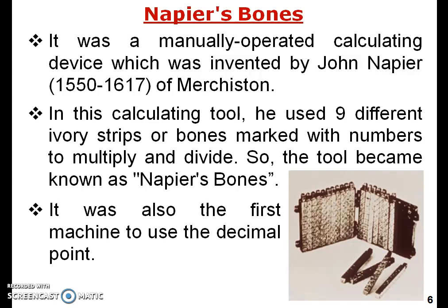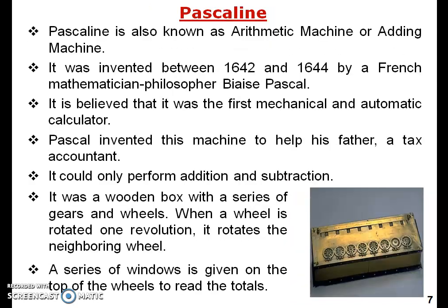The Pascaline was an advancement of the Napier Bones machine. Also known as an arithmetic machine or adding machine, it allowed two numbers to be added. It was invented between 1642 and 1644 by French mathematician and philosopher Blaise Pascal. It is believed to be the first mechanical and automatic calculator.